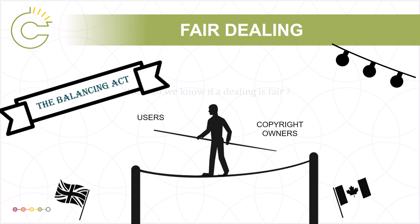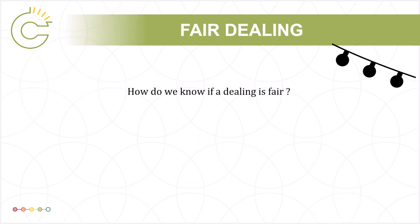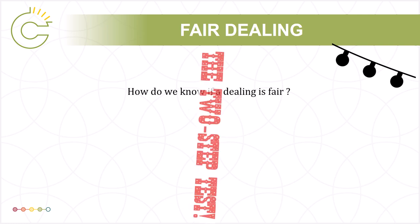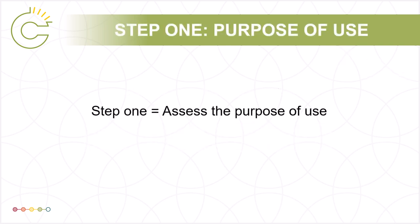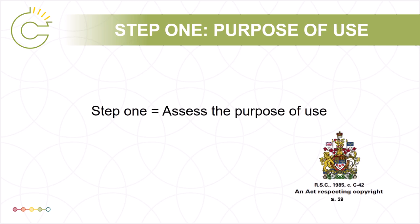Over a century of Canadian and UK legislation and jurisprudence have shaped how fair dealing is applied in Canada. So how can you determine if you can use something under fair dealing? There is a two-step test for assessing whether a particular use of some or all of a copyright protected work might reasonably count as fair dealing. The first step is determining whether the use is eligible to be considered for fair dealing, done by assessing the purpose of use.